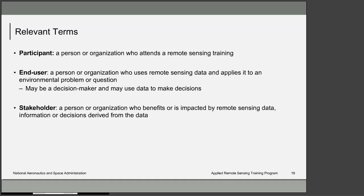Before we move on to the next topic — end user needs assessments — I wanted to address a couple of relevant terms. Going forward, we'll be using the terms participant, end user, and stakeholder. Depending on your program, these terms might have different definitions. For RSET: a participant is a person or organization who attends a remote sensing training; an end user is a person or organization who uses remote sensing data and applies it to an environmental problem or question, and may be a decision maker who uses that data to drive policy; and a stakeholder is a person or organization who benefits or is impacted by remote sensing data, information, or decisions derived from that data.